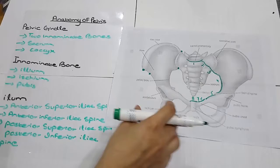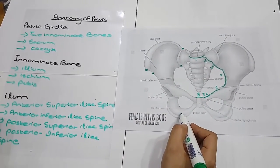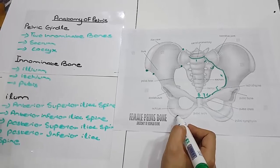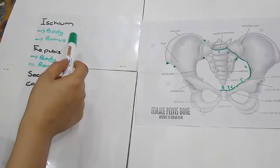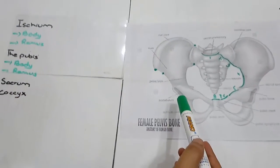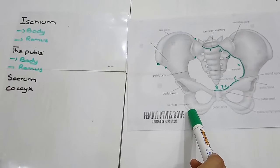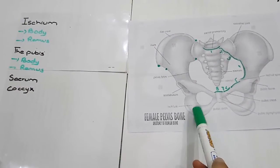Now what is the ischium? Here you could see this is the ischium. Ischium comprises of body and ramus. Ischium lies in the inferior posterior part of the innominate bone and it consists of body and ramus.